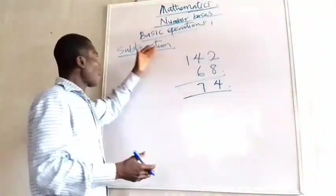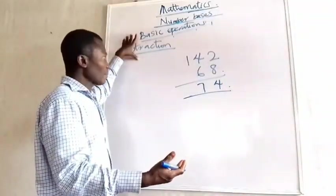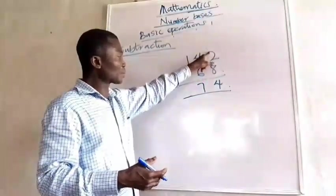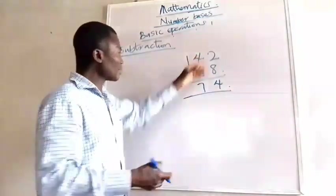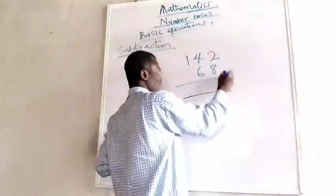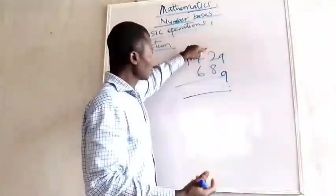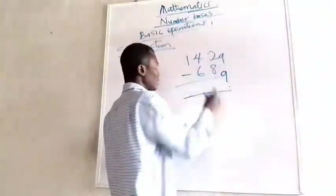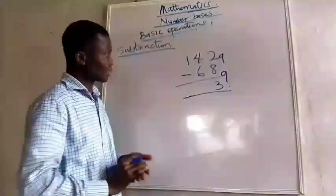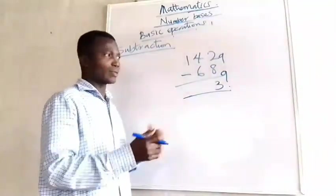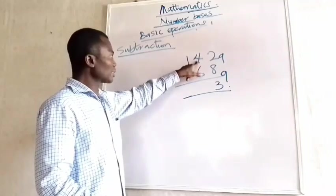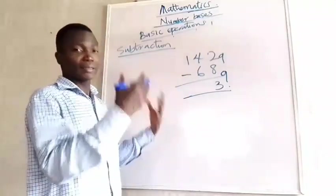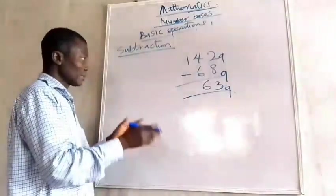You will meet this same situation with other bases. The key concept is: when you take one from a position in another base, that borrowed 1 represents the base value, not 10. For example, if it is base 9, borrowing from the next position gives you 9. So 9 plus 2 is 11; 8 from 11 is 3. And if you still can't subtract, you borrow again — taking 1 gives you 9 more, so 9 plus 3 is 12; 6 from 12 is 6.